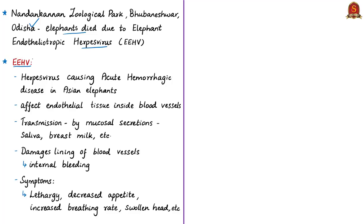Elephant Endotheliotropic Herpes Virus is a type of herpes virus belonging to the family Herpesviridae. These herpes viruses are pathogenic — they cause diseases in a wide variety of animals including humans, monkeys, birds, frogs and even fishes. One type of herpes virus is what we call Elephant Endotheliotropic Herpes Virus.